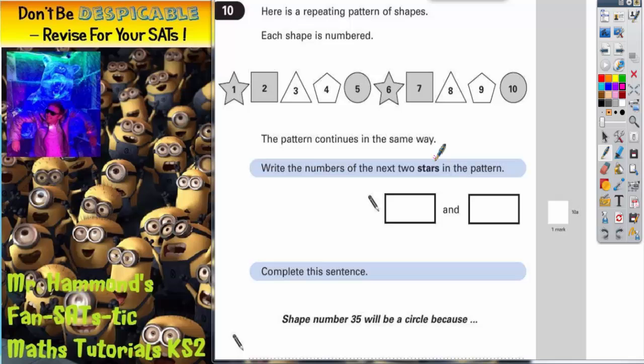The pattern continues in the same way. Write the numbers of the next two stars. Well, you can see that it goes pentagon, circle, star. So here we've got pentagon, circle, so the next shape would indeed be a star.